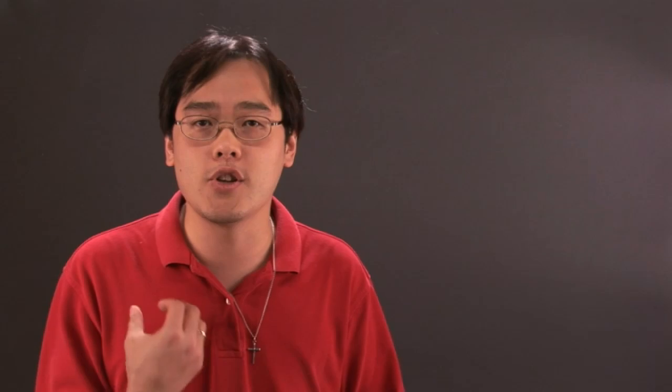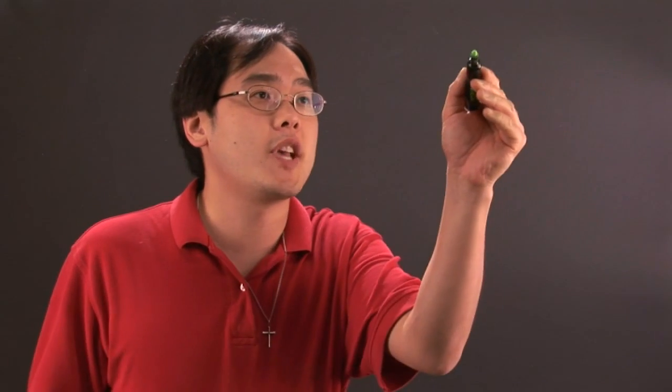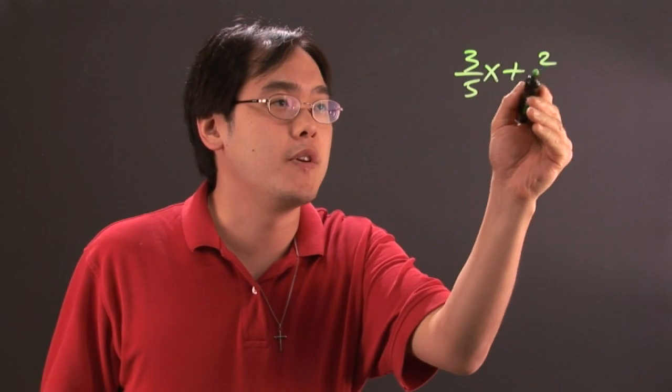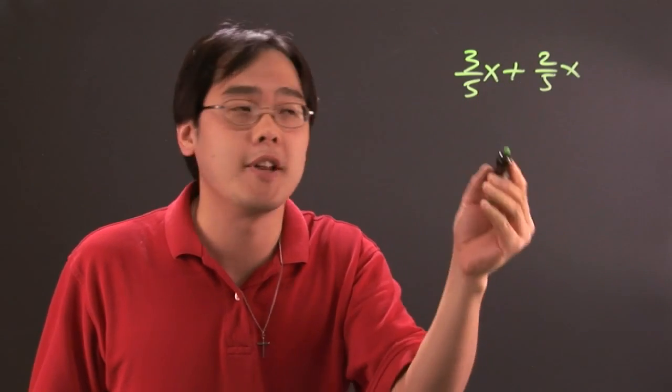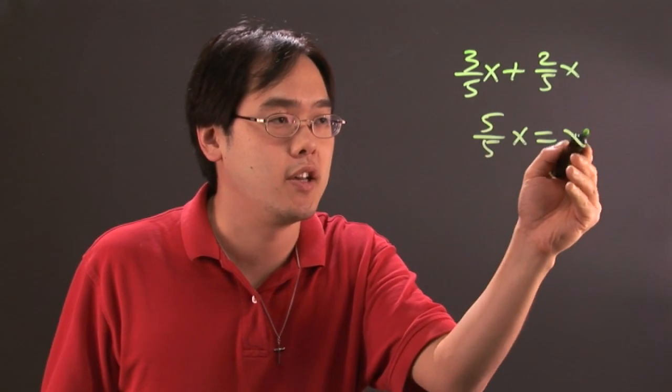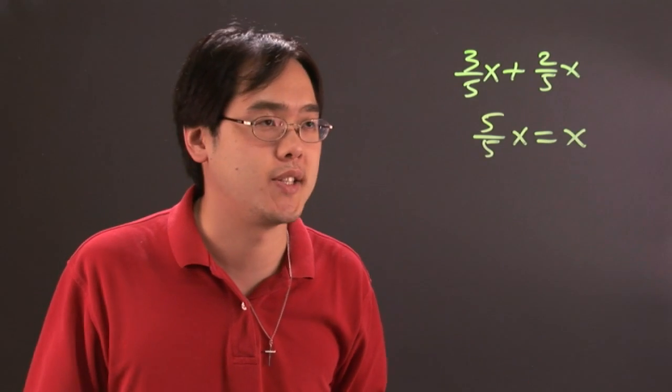So when it comes to dealing with those, you just have to think about: can you combine them? And if so, do the fractions have the same denominator, because that's the only way you can really combine them. For example, 3/5x + 2/5x - the fact that they have the same denominator means you can combine them, and this will be 5/5x, which is another way of saying just x.